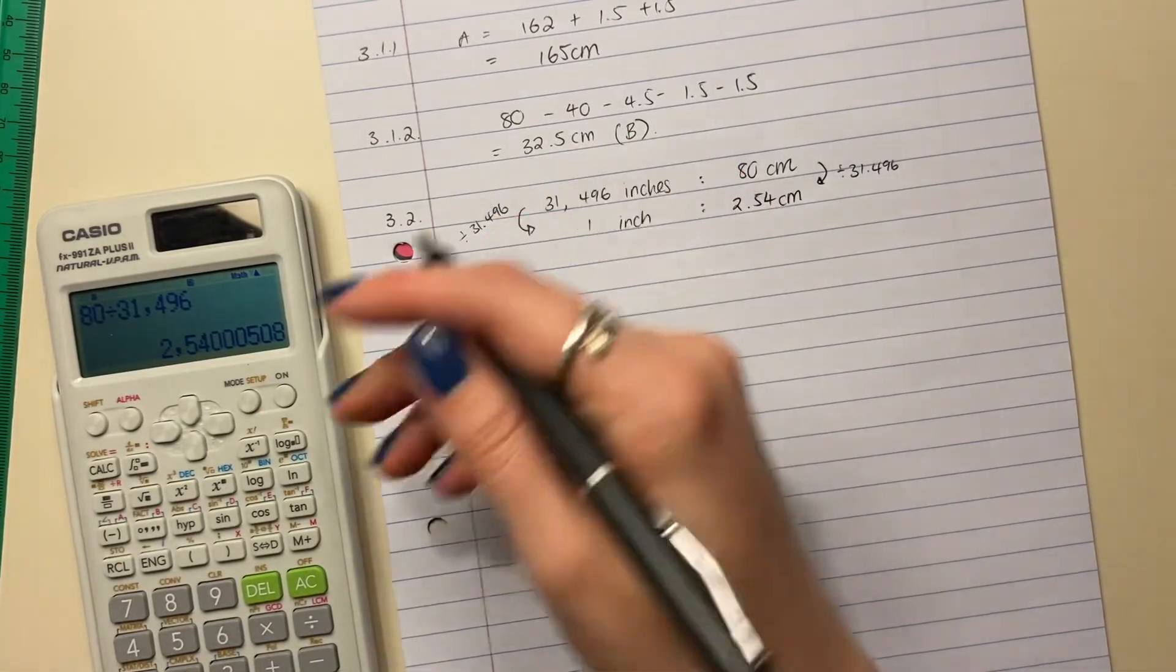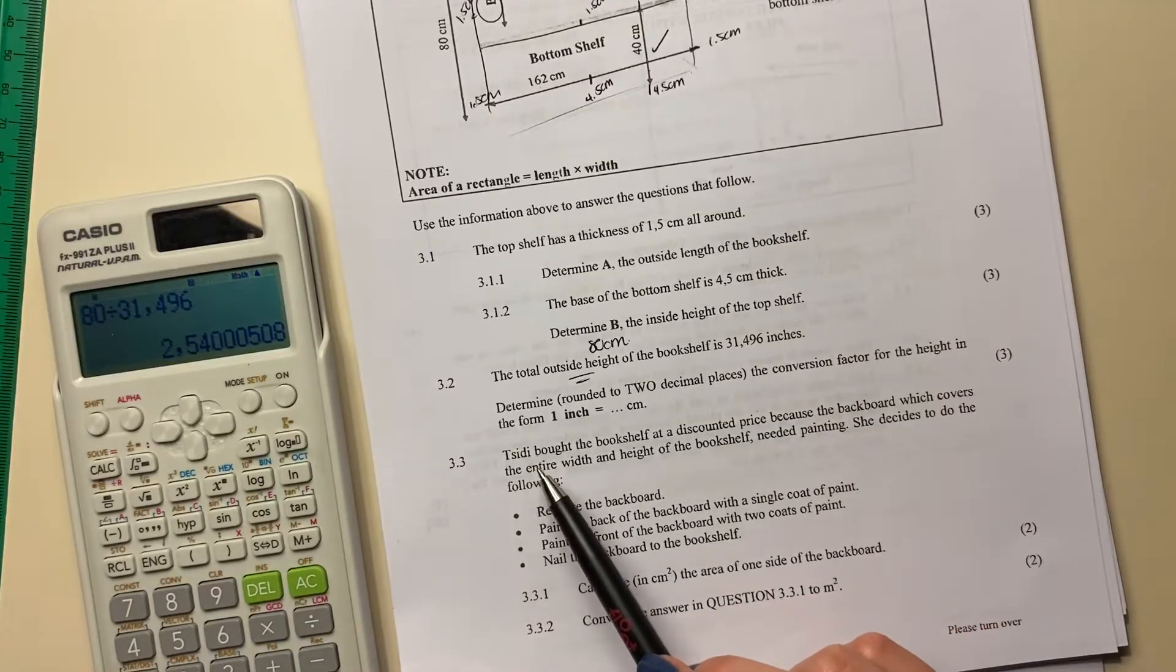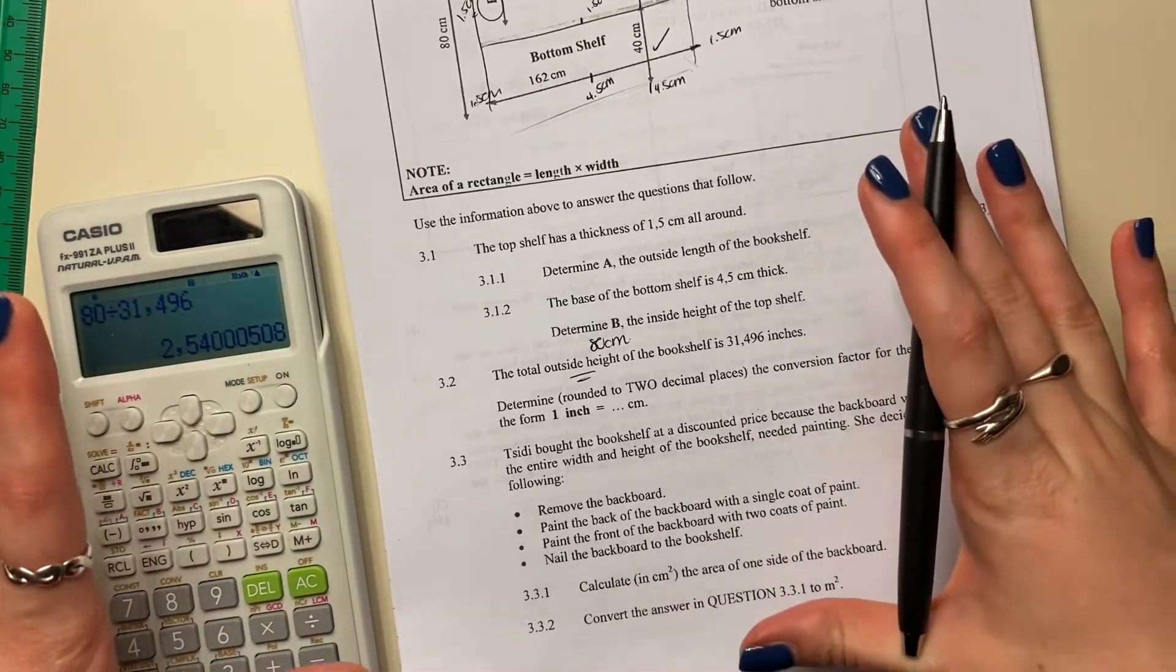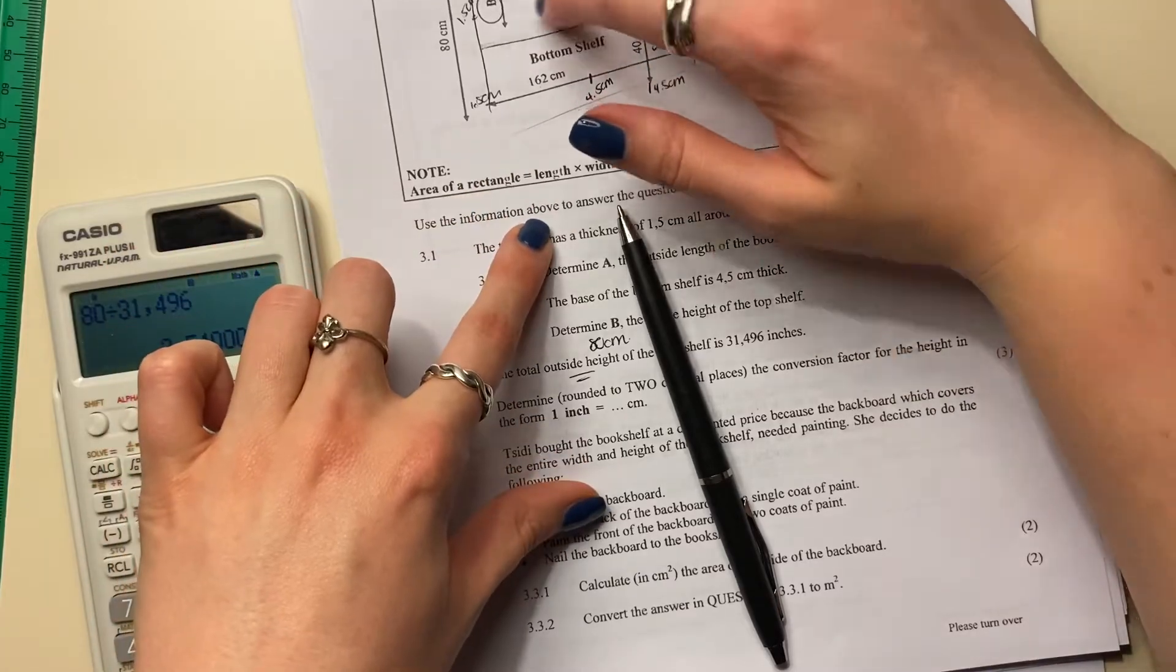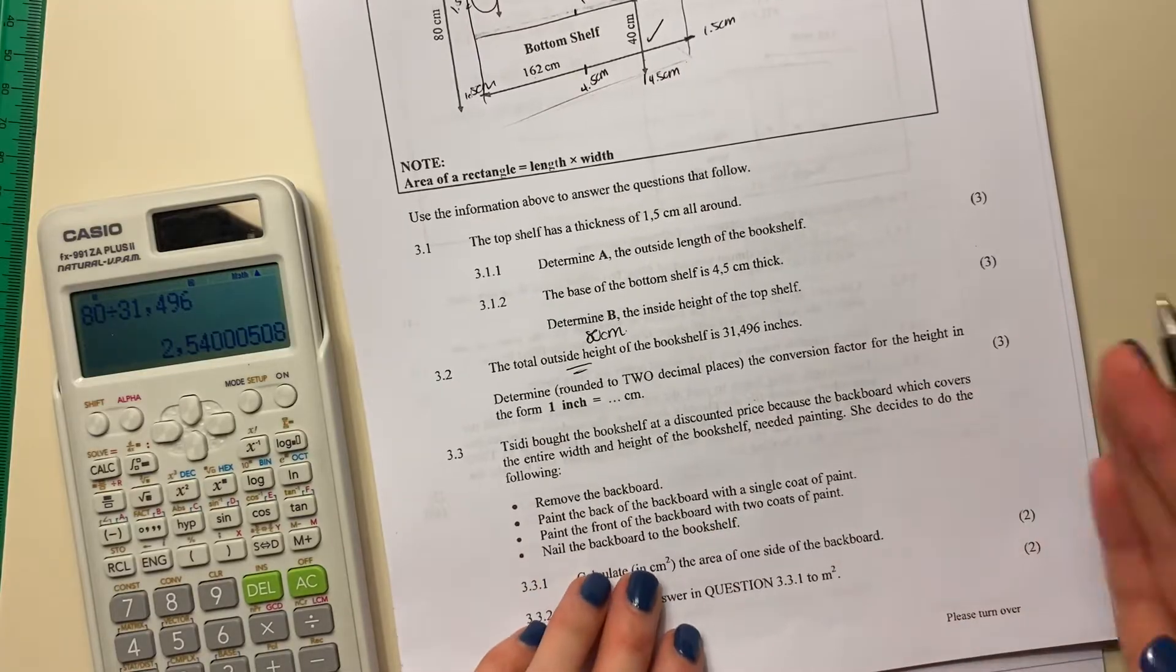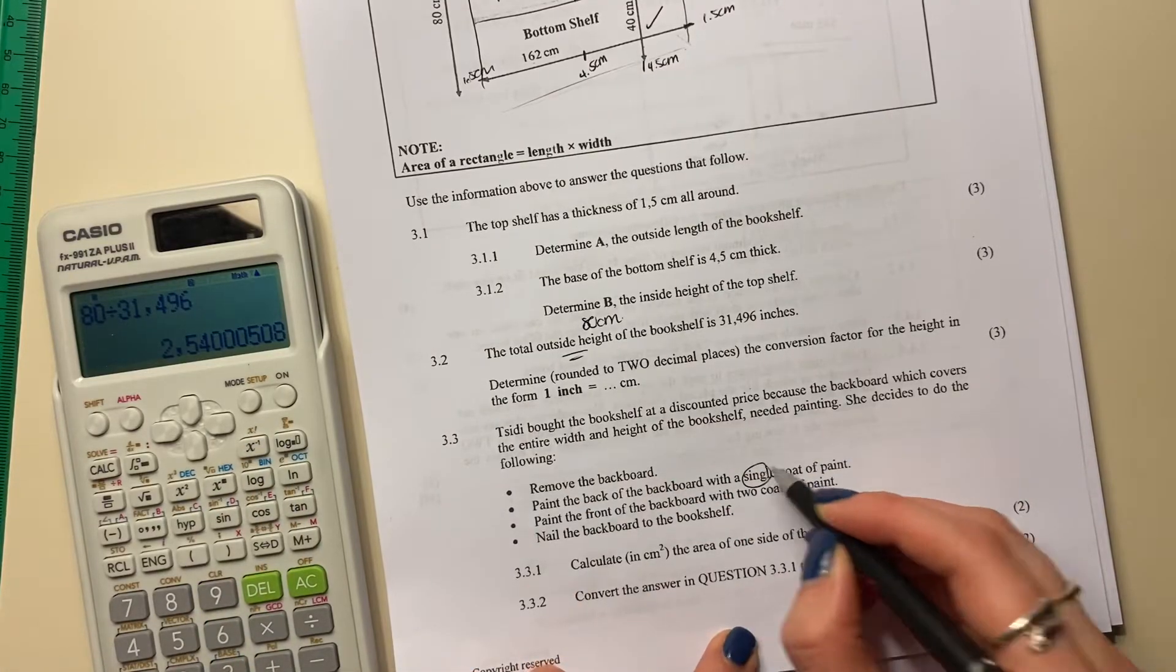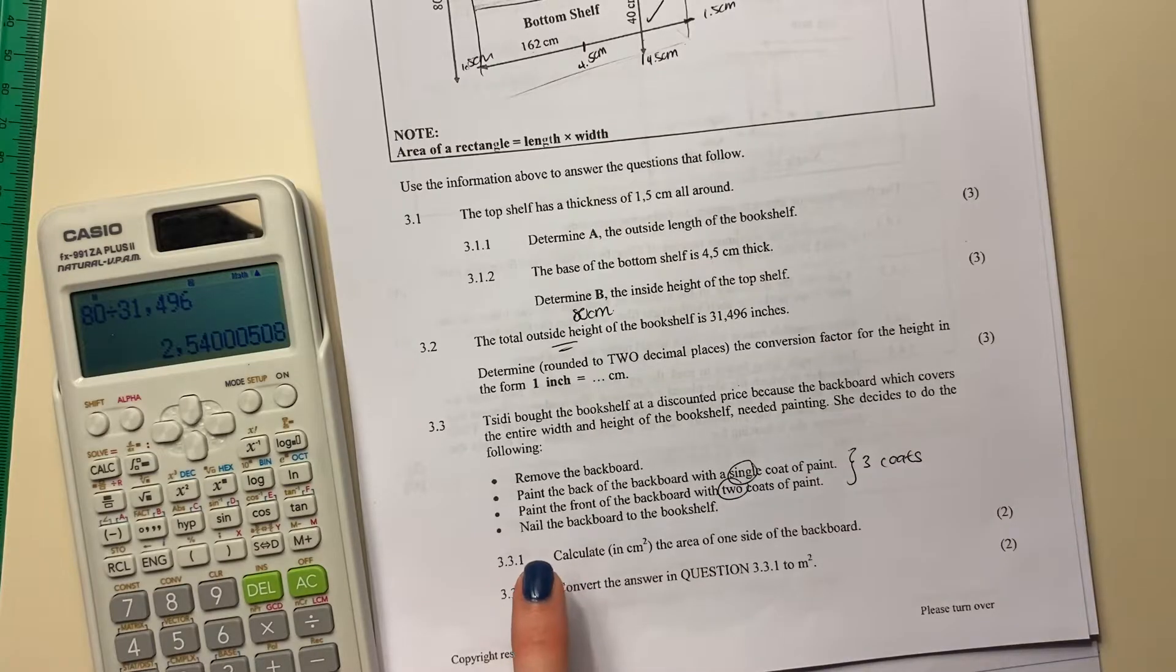So let's move on to the next question, which again is a fairly common question, but a question that students struggle with. It says, Titi bought the bookshelf at a discounted price because the backboard, which covers the entire width and height of the bookshelf, needed painting. So here would be the bookshelf, and basically at the back, to make sure the books don't fall out the back, you put in this backboard, which covers the entire width and height of the bookshelf needed painting. So obviously she's going to paint it. She's going to remove the backboard off the bookshelf and she's going to paint the back of it with a single coat and then the front of it with two coats. So together we have three coats. And then she's going to nail the backboard to the bookshelf.